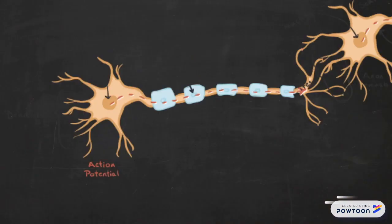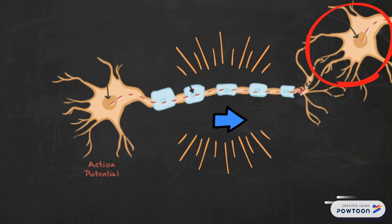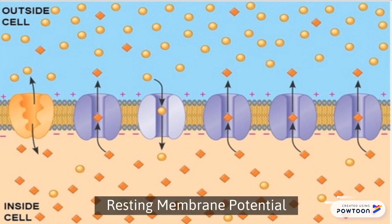When a neuron is stimulated, it sends an electric impulse down its axon to the following neuron. This nerve impulse is called the action potential. A neuron undisturbed by any electrical signal is called the resting neuron, and it is more negative than its surroundings. This difference between the inside charge of the neuron and the outside of the neuron is called the resting membrane potential.